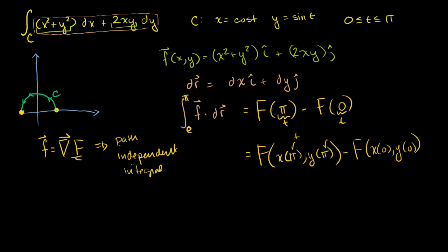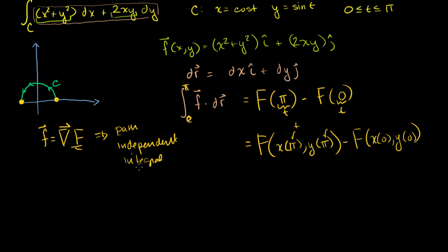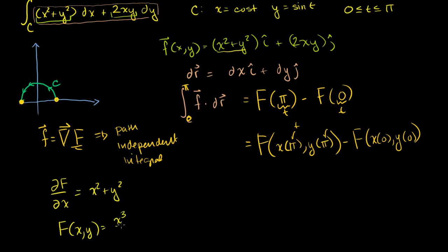So let's find our capital F. We know the partial of F with respect to x has to equal x² + y². Taking the antiderivative with respect to x, F(x, y) must equal x³/3 plus xy², since y² is just a constant in terms of x, plus some function g(y) — a function of y that disappears when you take the partial with respect to x.